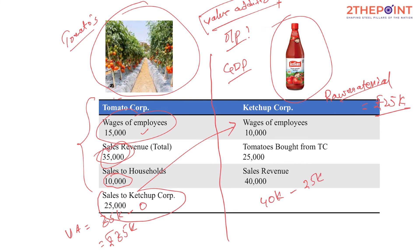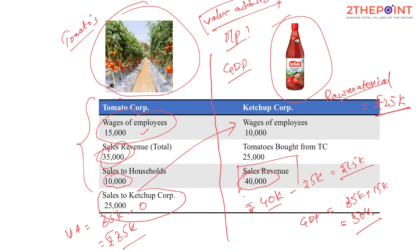The value addition by the ketchup corporation is 15,000. So the total value addition — total GDP computed using the value addition method — is 35,000 plus 15,000, which equals 50,000 rupees. You can also verify this using the expenditure method and income method, and you will get the same 50,000.